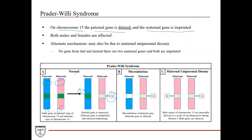The mechanisms by which Prader-Willi occurs: first, you can have microdeletion of the paternal gene. Since the maternal gene is methylated, you have no expression of this gene at all, and you develop Prader-Willi syndrome.